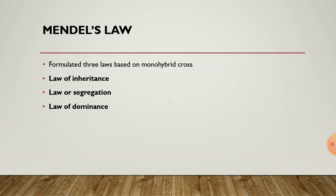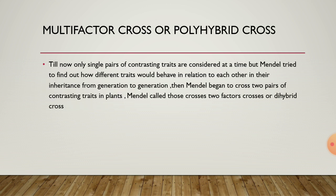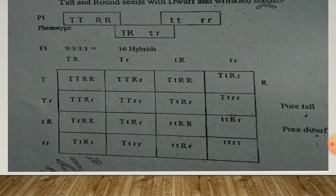The next one is the multifactor cross or polyhybrid cross. Until now only single pairs of contrasting traits were considered at a time, but Mendel tried to find out how different traits would behave in relation to each other in their inheritance from generation to generation. Mendel began to cross two pairs of contrasting traits in plants, calling these two-factor crosses or dihybrid crosses. The ratios obtained were: 9 tall plants with round seeds, 3 tall plants with wrinkled seeds, 3 dwarf plants with round seeds, and 1 dwarf with wrinkled seeds.